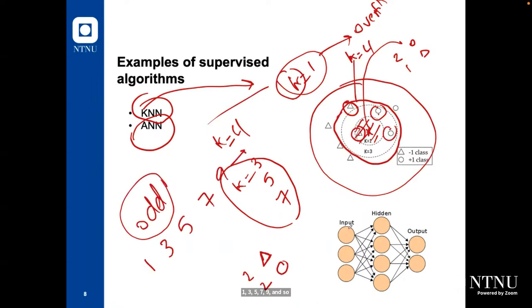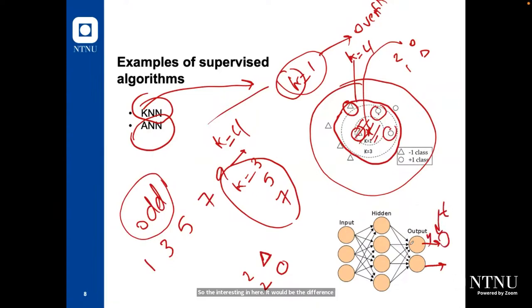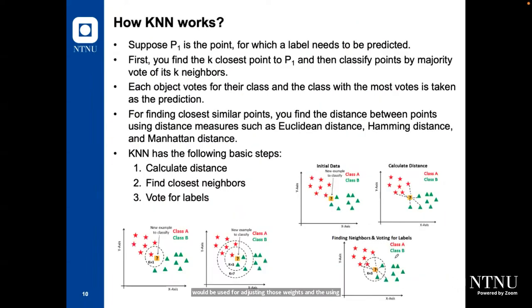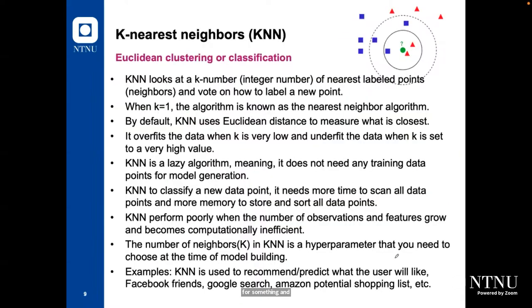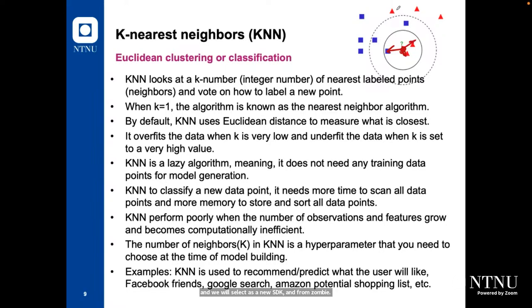For a feedforward neural network, we need to calculate the error signal, which is the difference between the target and the prediction: e = (1/m) * sum(t - y)^2. This is the mean squared error, which will be used for adjusting weights and biases using error backpropagation. This is how KNN works — we use Euclidean distance, also called Euclidean clustering or classification. For a new example (the green one), we calculate the Euclidean distance between this example and the whole dataset, sort from small to large, and select the nearest k neighbors. In this example with k=3, the new example is classified as a red triangle.